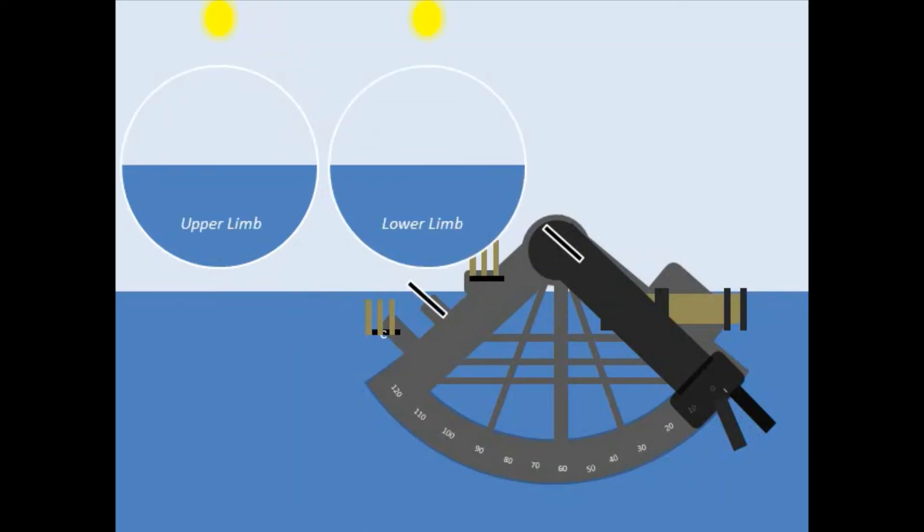Set the shade glasses in place to avoid eye burns. Slowly move the index arm outward from the zero degree position until the limb of the sun's reflected shadow will come into tangent with the horizon.